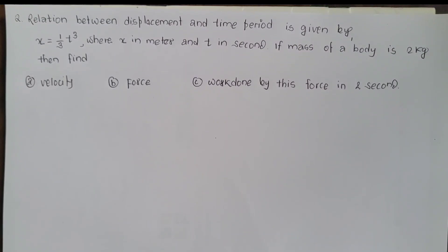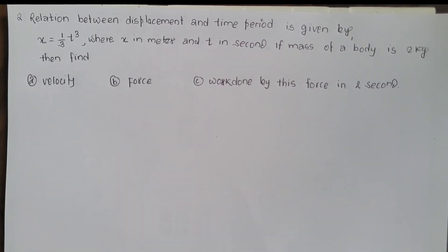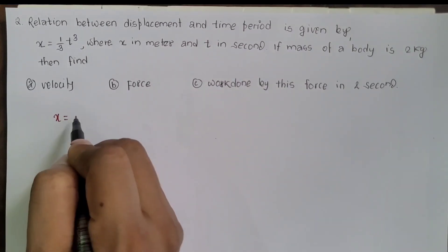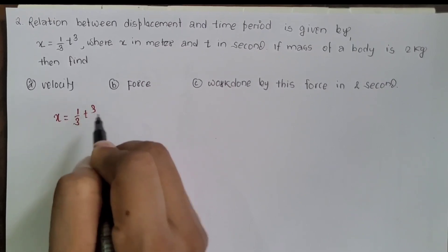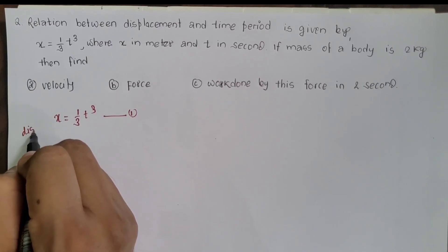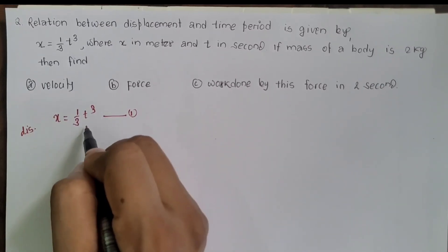The relation between displacement and time is given by x = (1/3)t³, where x is in meters and t is in seconds. If the mass of a body is 2 kg, find the velocity, force, and work done by this force in 2 seconds.